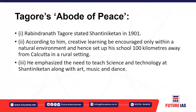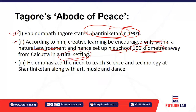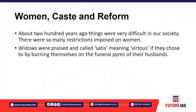Rabindranath Tagore had similar ideas. He started Shantiniketan in 1901, in the backdrop of the promotion of English as the dominant language. According to him, creative learning should be encouraged within the natural environment. He set up his school 100 kilometres away from Calcutta in a rural, natural setting and emphasized the need to teach science and technology along with art, music, and dance.